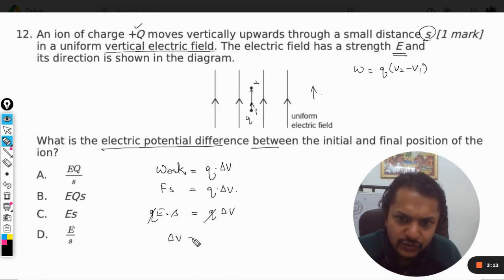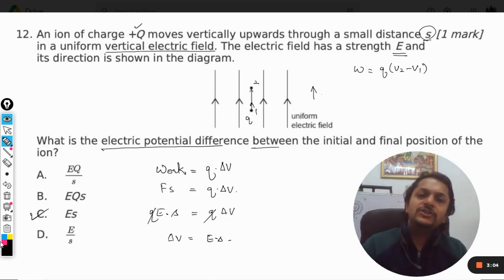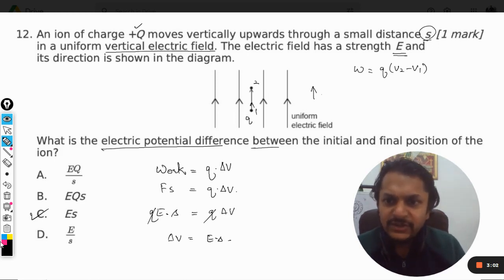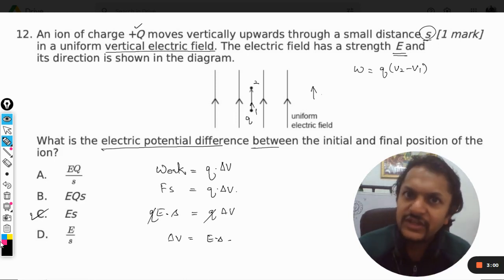There it is, we cancel Q with Q, so delta V will be E into S. So there we are, the potential difference will be equal to E into S. It will be equal to the product of the electric field strength and the distance that was traveled by the charge.